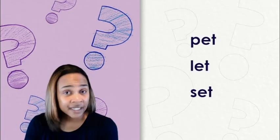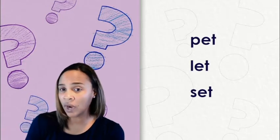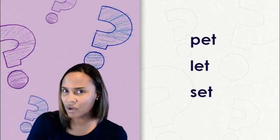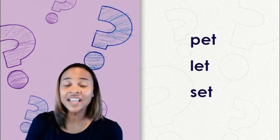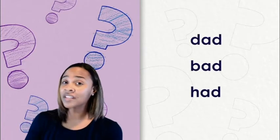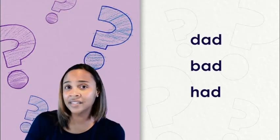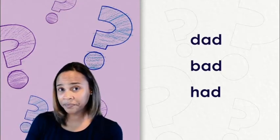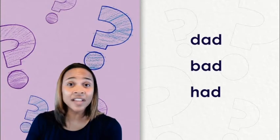Now I want you to listen to these words and tell me the last sound you hear. Listen to the word pet, let, set. What is the last sound you hear in these words? Yes. The last sound is the T sound for the letter T. How about these next words? Listen for the sound that you hear at the end of these words. Dead, bed, head. What's the last sound you hear in these words? Awesome. The last sound is the D sound for the letter D.